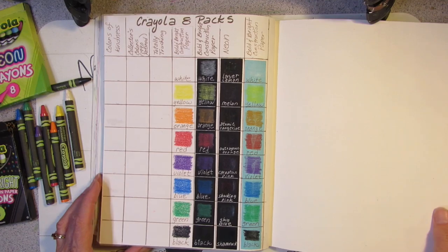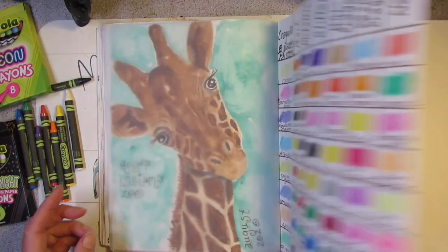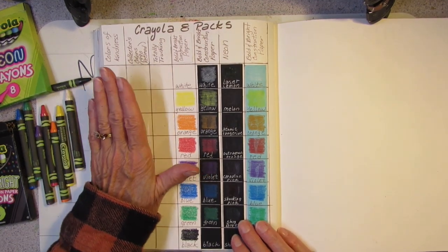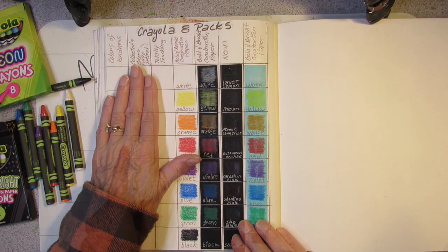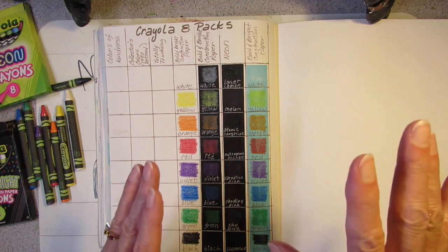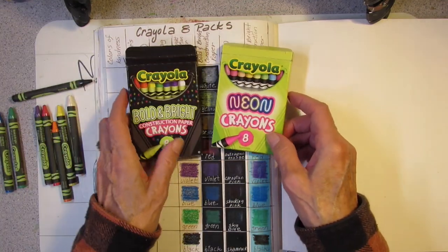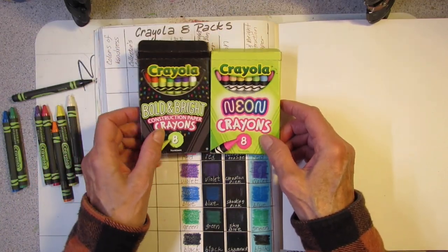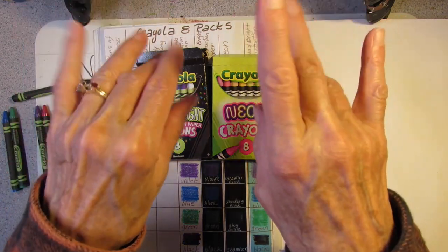All right. So, I'm going to end this video right now and set up the video for the other three packs of crayons that I bought. So, thanks for coming along today while I compare the neon crayons to the bold and bright crayons. And, definitely, this is the one you want for dark paper. Stay tuned for part two. Bye-bye now.